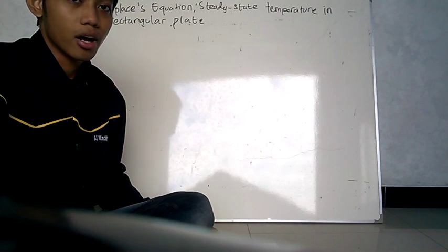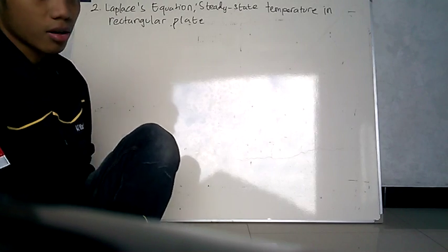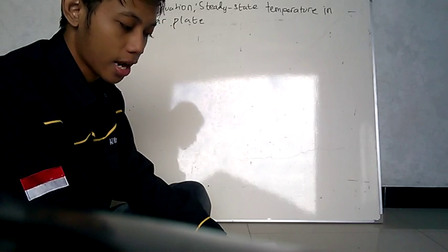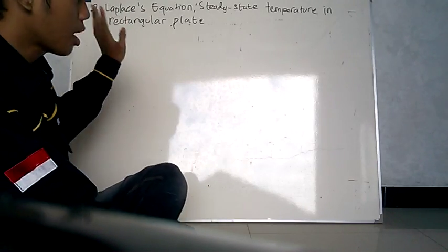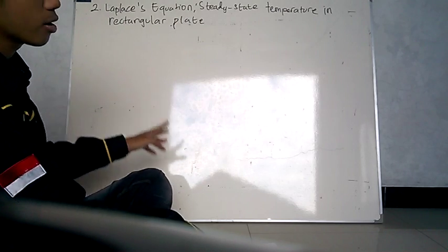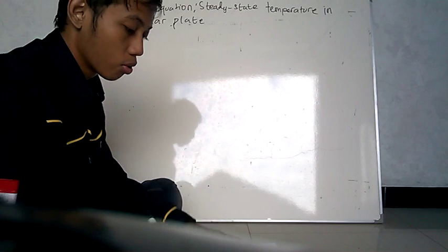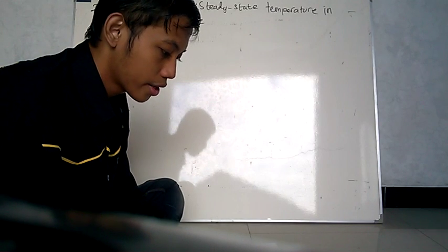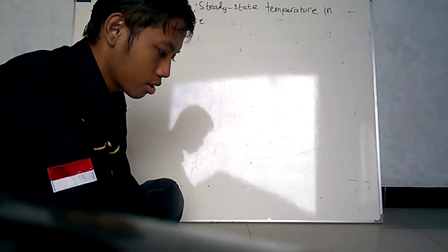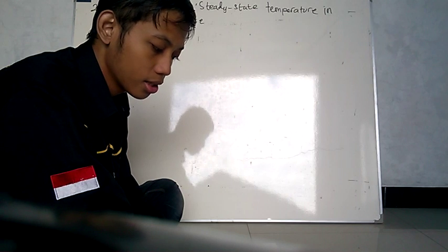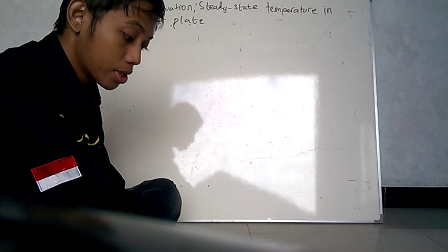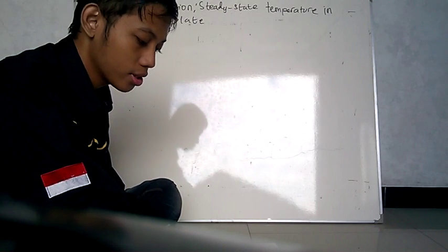In this moment, I will show you about this chapter about Mary Elbow's mathematical method in the physical science. About this chapter about Leibniz equation, steady state temperature in rectangular plate. In the number 2, Leibniz equation steady state in rectangular plate.